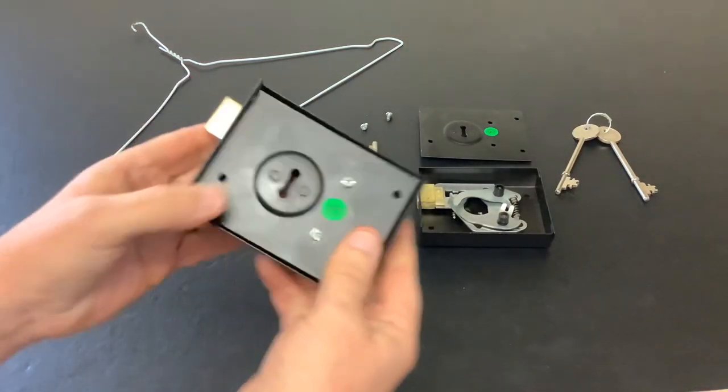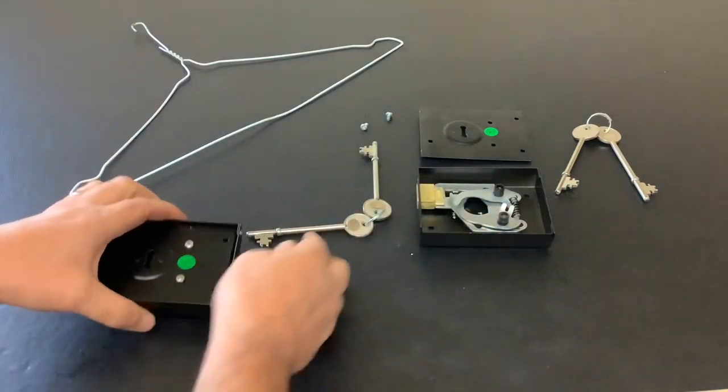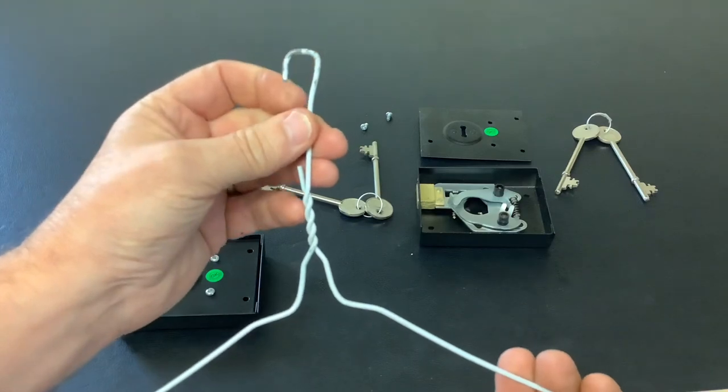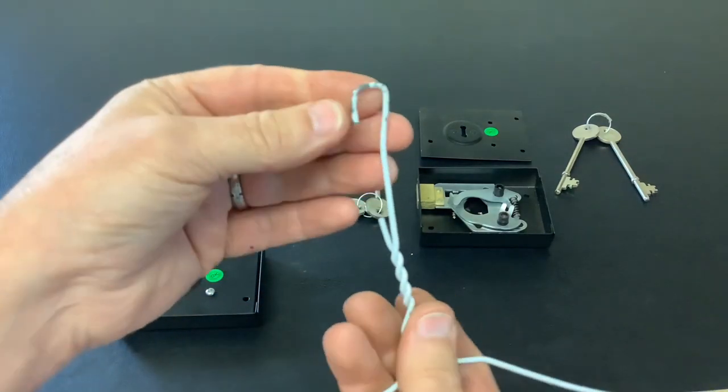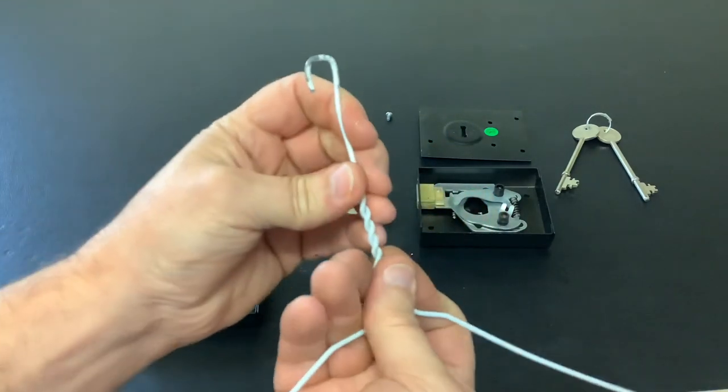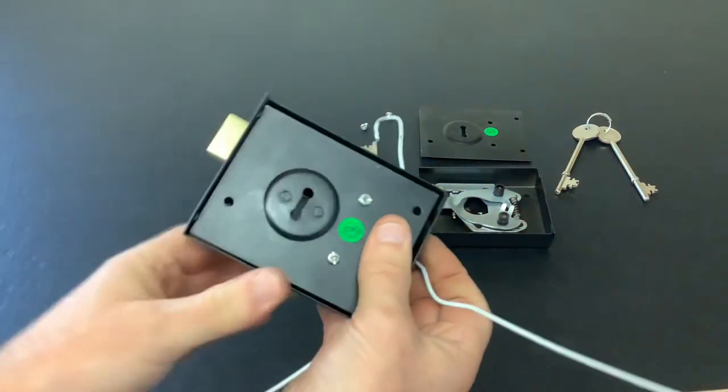So first of all, let's show you how to pick it with a coat hanger. I've got a normal coat hanger and I've put a little bend on the top. This one's coated in white plastic or something—it's all coming off. But normally these are just plain wire.